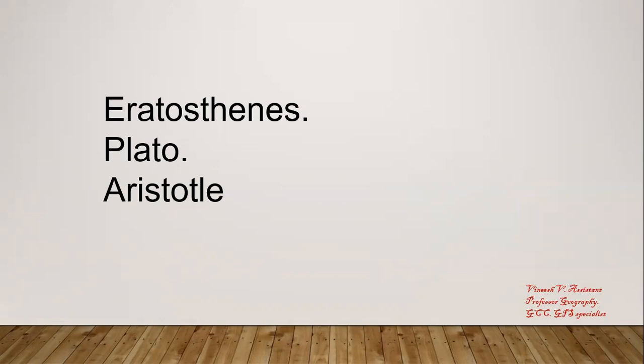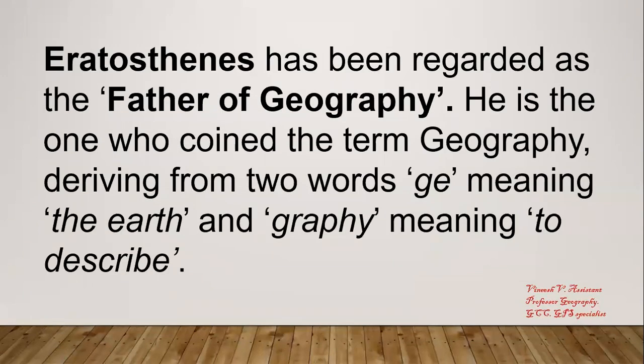One is known as the father of geography, one as the father of political science, and one as the father of philosophy. Aristotle is the father of philosophy; Plato is known as the father of political science; and Eratosthenes is popularly known as the father of geography. Eratosthenes has been regarded as the father of geography — he is the one who coined the term 'geography,' deriving it from two Greek words: 'geo' meaning the earth and 'graphia' meaning to describe.